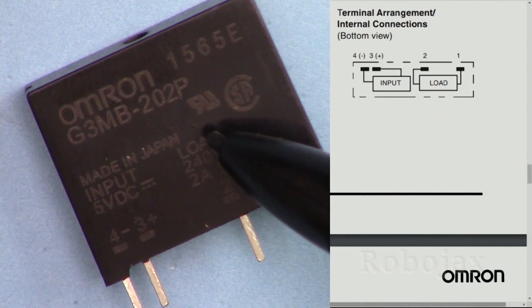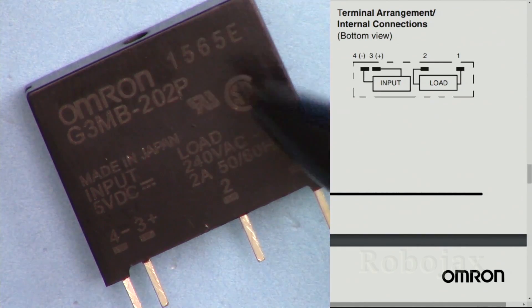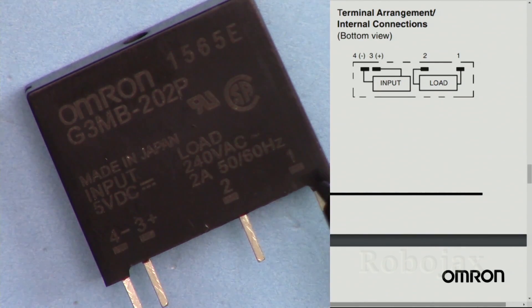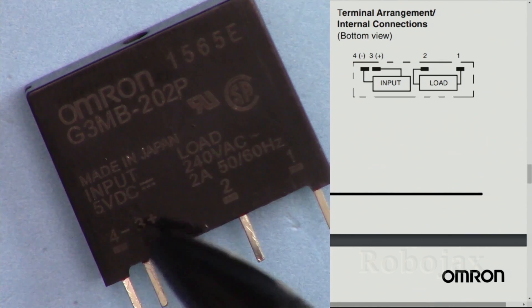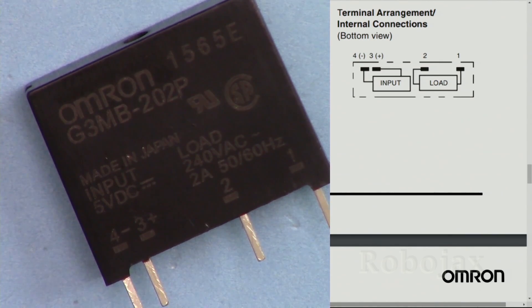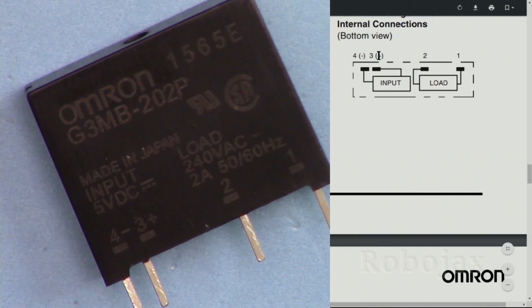In case you want to use the solid-state relay without the module, the pins have been labeled here as 1, 2, 3, and 4. This is from the datasheet. Pin 3 and pin 4 is for the input. Pin 3 is the positive pin, pin 4 is the negative. Pin 1 and 2 is for the load.